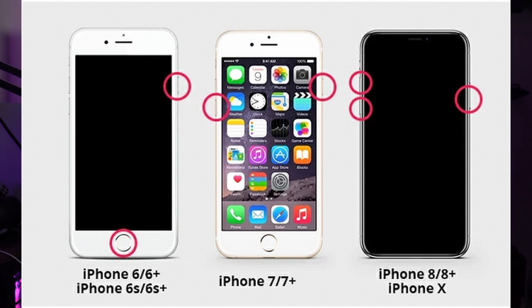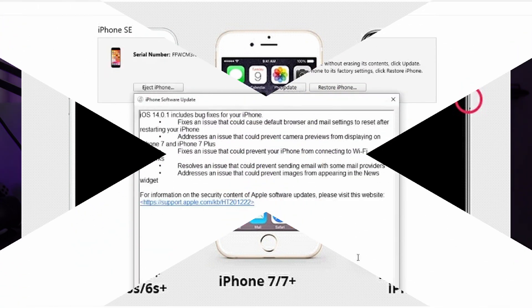For iPhone 7 and 7 Plus, press and hold the Volume Down button and Power or Sleep/Wake button simultaneously until you see the recovery mode screen. For iPhone 6s and earlier, press and hold the Home button and the Power or Sleep/Wake button simultaneously until the recovery mode screen appears.